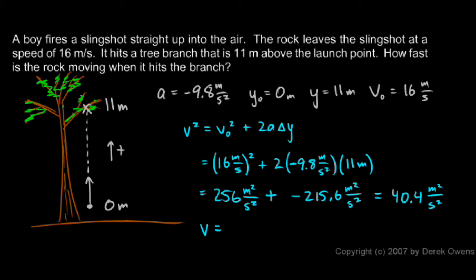And when I take the square root of this, I'll get the square root of 40.4. And the square root of meters squared per second squared will just be meters per second. So I take the square root and I end up with 6.4. And the units are meters per second. And that's my answer.